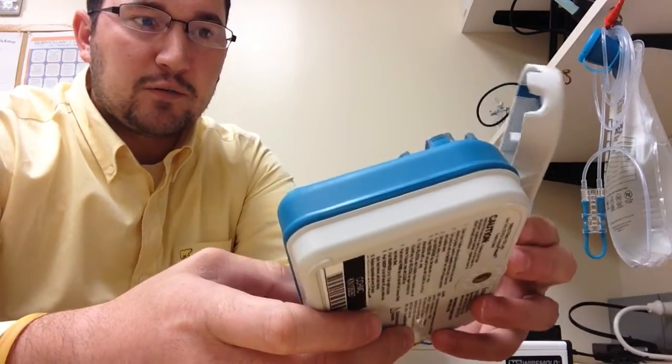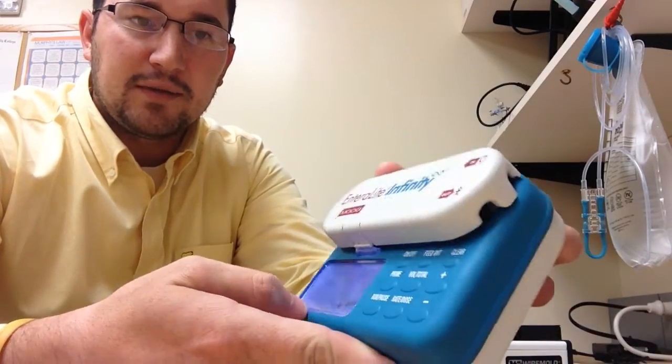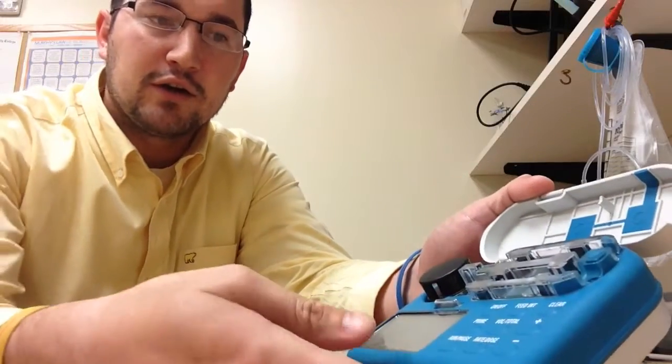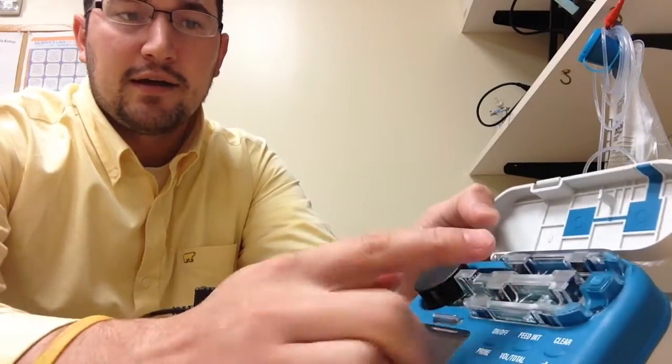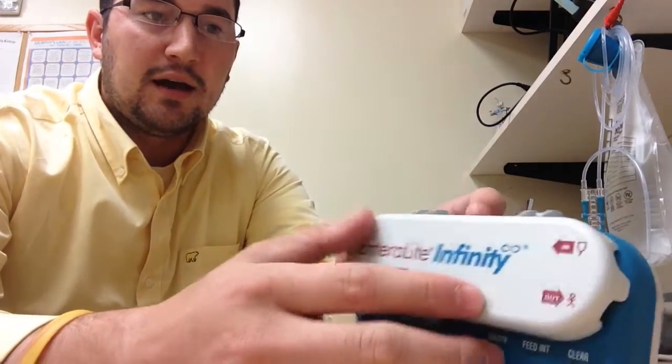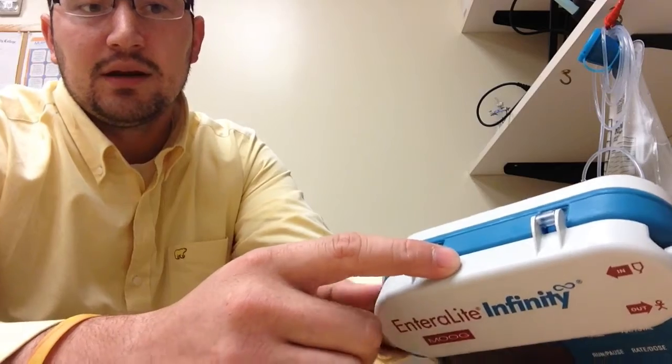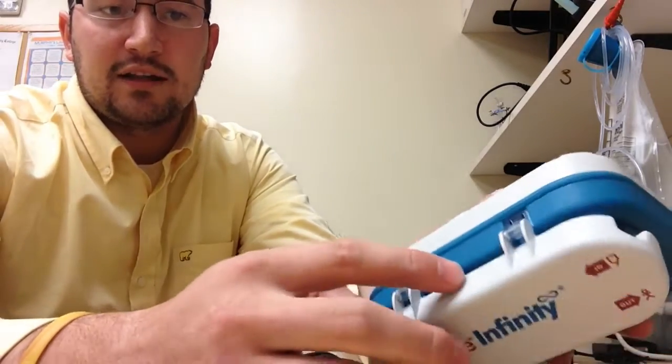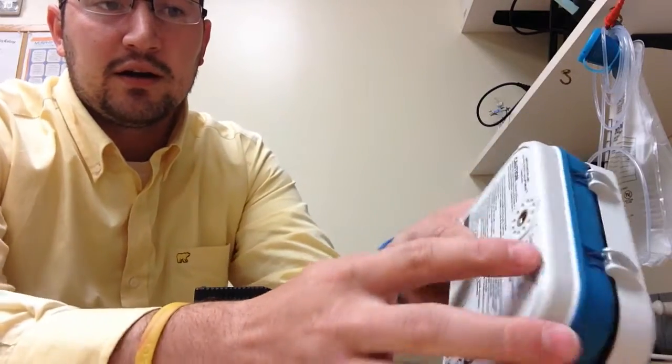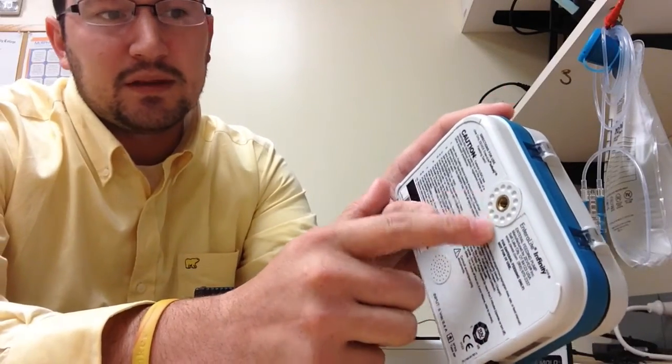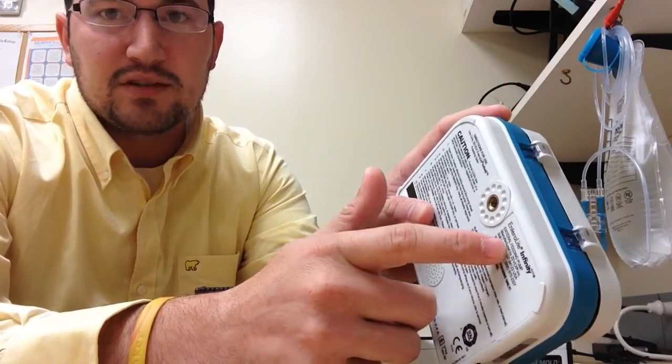Once you know that the battery works, you want to give the housing a good look over. As you can see here, you open up this door here. It's where the line goes in. On the back of the pump, you want to check. There's a lot of times there's cracks on the door and also here where they keep the attachment for IV pumps and poles.